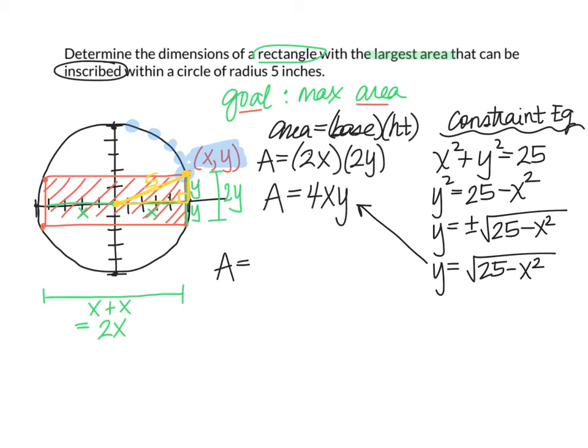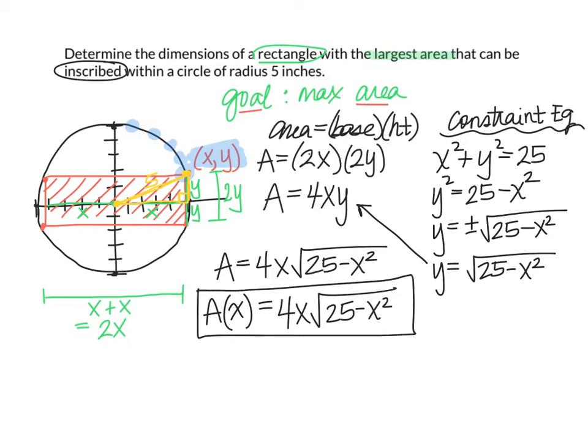I'm going to substitute that into my area model here. And that gives me a new equation, area equals 4X times the square root of 25 minus X squared. And now I have one input, my only input variable is X, and my output is area. So I have a function in a single variable. If you want to use function notation, then you could change this from area to area as a function of X. So we would read that A(X) equals 4X times the square root of 25 minus X squared. And this is our mathematical model. This is our function that's going to relate X with the area.